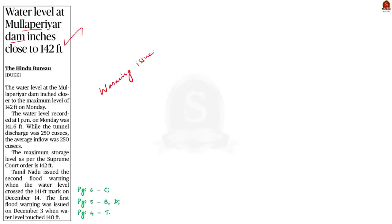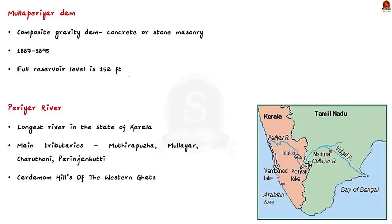This article talks about the Mullaipariyar Dam. The news is that water levels in the dam have been increasing and a subsequent flood warning has been issued by the Tamil Nadu government. Let us learn about Mullaipariyar Dam and its location. Mullaipariyar Dam is a composite gravity dam built on the river Periyar, which is located in the state of Kerala. The dam was constructed between the years 1887 and 1895.